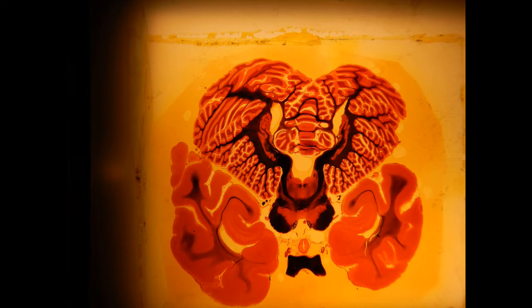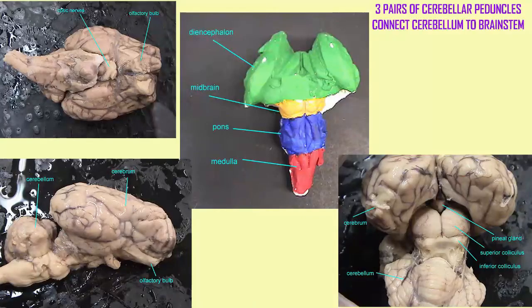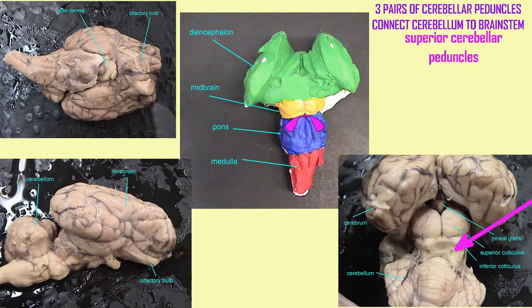The cerebellum attaches through three pairs of structures known as cerebellar peduncles. The superior cerebellar peduncles connect the cerebellum to the midbrain. They can be observed just caudal to the inferior colliculi of the midbrain.